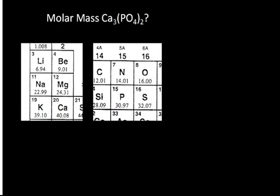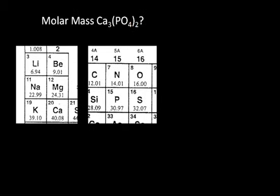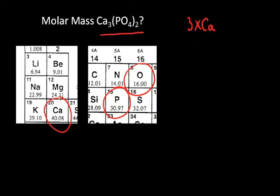What about the molar mass for calcium phosphate? In this case, you would look on the periodic table, find the molar mass for calcium, find the molar mass for phosphorus, and find the molar mass for oxygen. You would interpret this formula as, for each one formula unit, you have three atoms of calcium. You have, in this case, two phosphates, which would be two phosphorus and eight oxygen.